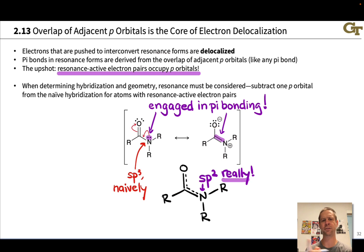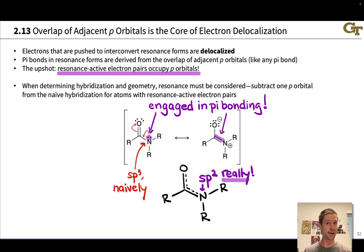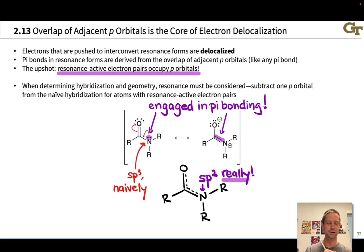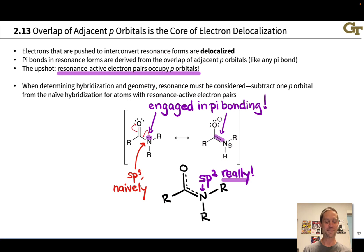Before leaving this slide, briefly on the oxygen atom: if you look at one resonance form, it appears naively sp3. But we understand that oxygen is engaged in pi bonding — that so-called lone pair is not actually non-bonding, it's a bonding pair. There is a C-O pi bond, and so the hybridization of that oxygen is sp2.